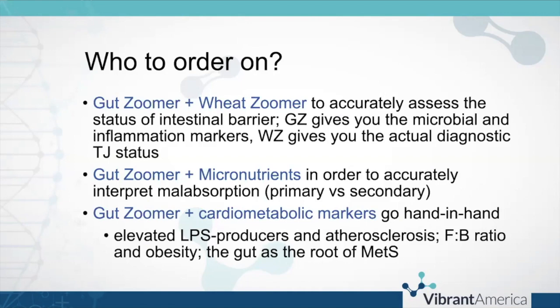Some common combinations: GutZoomer and Wheat Zoomer gives you a really accurate assessment of the intestinal barrier — the GutZoomer provides the microbial side and inflammation markers, while the Wheat Zoomer gives you the actual diagnostic levels of tight junction status. GutZoomer and micronutrients is another key combination — if you're running a micronutrient test and you see fat-soluble vitamins that are low, looking at the GutZoomer is a good place to start. You may also see correlations between low vitamin K2 levels and low levels of the bacteria that produce vitamin K2.